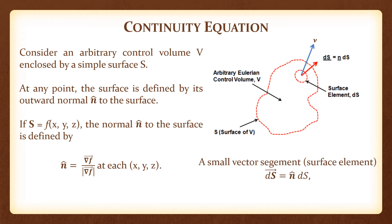If you were to consider a small surface element whose infinitesimal area has magnitude ds, and the direction at that point for that surface is given by the outward normal, then the ds vector would be n times the magnitude, which is the surface area of that infinitesimal element.